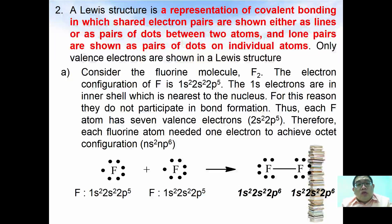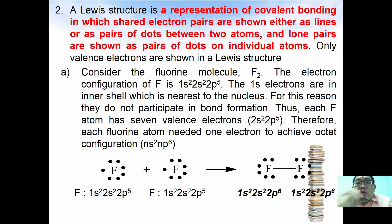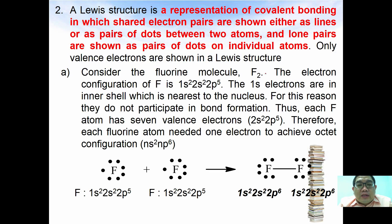A Lewis structure is a representation of covalent bonding in which sharing electron pairs are shown either as a line or as a pair of dots between two atoms, and lone pairs are shown as pairs of dots on individual atoms. Only valence electrons are shown in the Lewis structure.